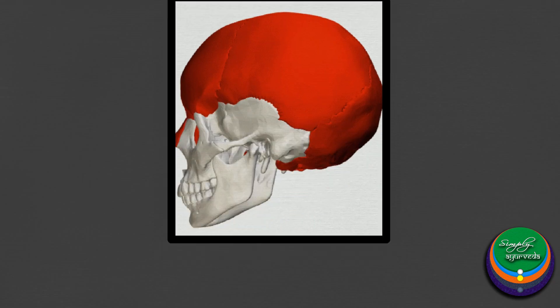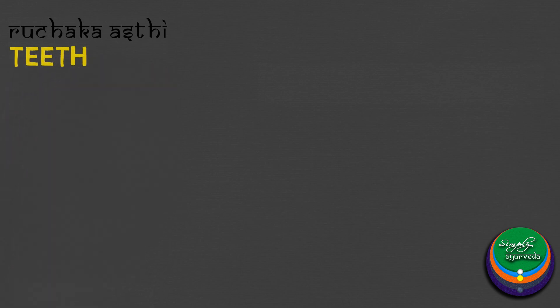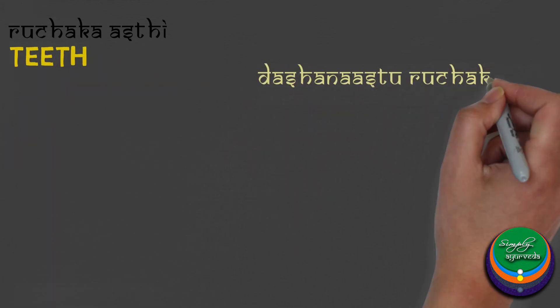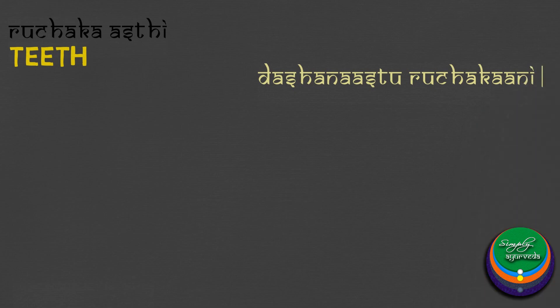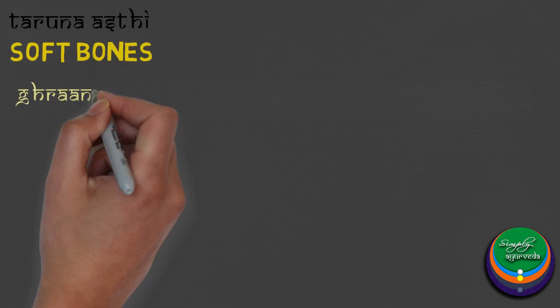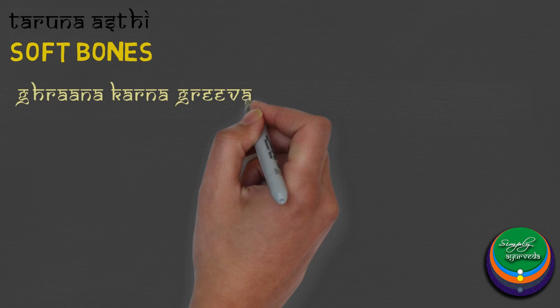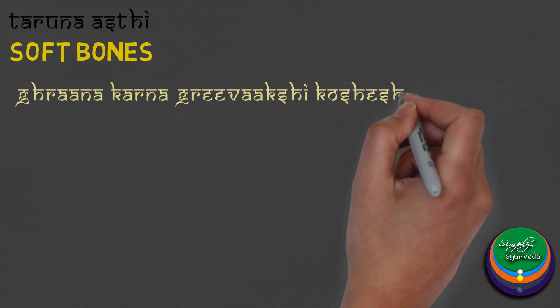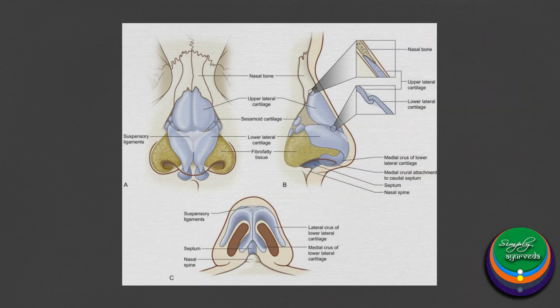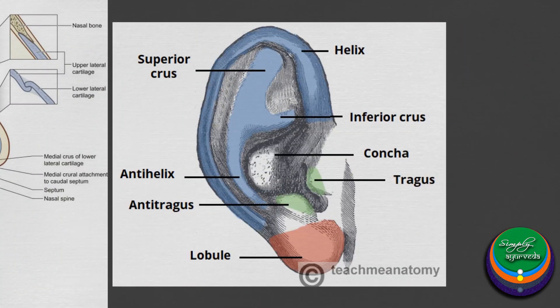Ruchaka or teeth — the term Ruchaka means that which is shining or glittering. The teeth are explained as bones in Ayurveda. The cartilages are considered a softer type of bones and hence included under this classification. They include the cartilages of the nose, ear, neck and orbit, etc.